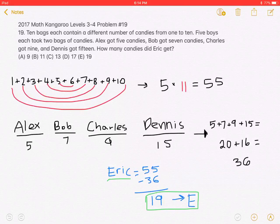That means we will have five groups of 11, or 5 times 11, which equals 55. 55 is the total number of candies. We know that Alex has five candies, Bob has seven, Charles has nine, and Dennis has 15.